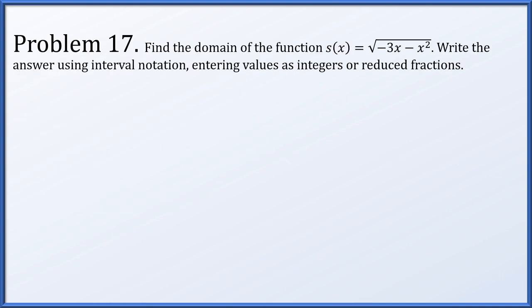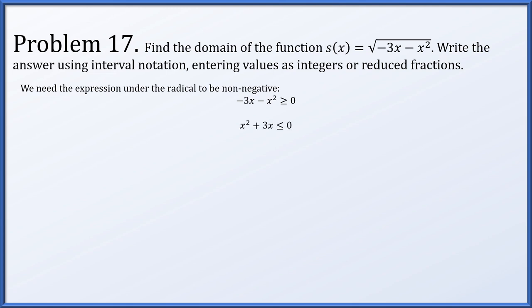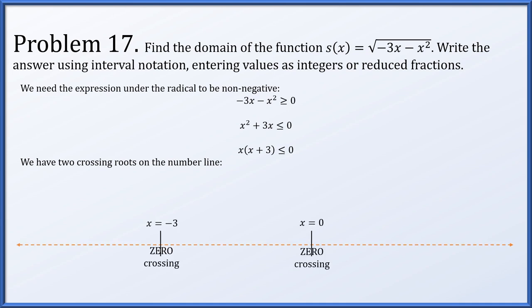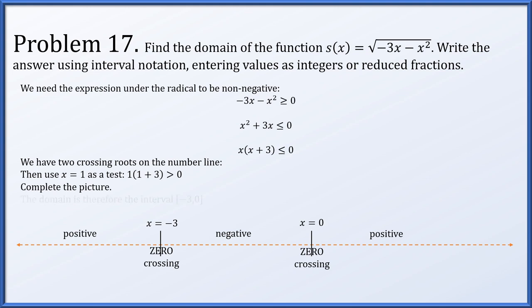Problem 17: find the domain of s(x) = √(−3x − x²) in interval notation. The expression under the radical must be non-negative: −3x − x² ≥ 0. Multiplying by −1 and reordering: x² + 3x ≤ 0, or x(x + 3) ≤ 0. The crossing roots are x = −3 and x = 0. Testing x = 1 gives a positive value; working leftward, the expression is negative between −3 and 0. Including endpoints, the domain is [−3, 0].